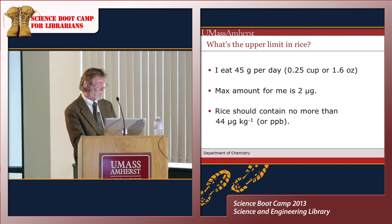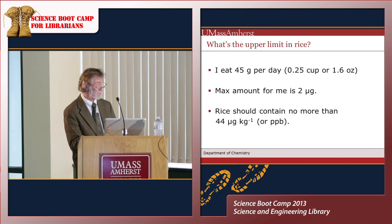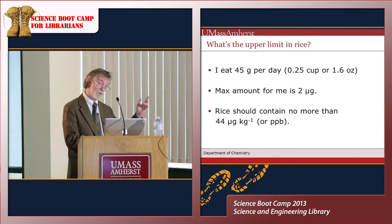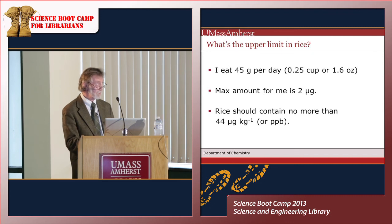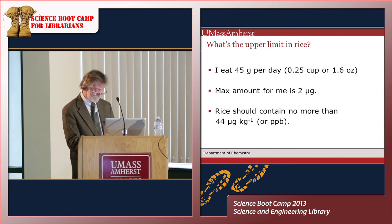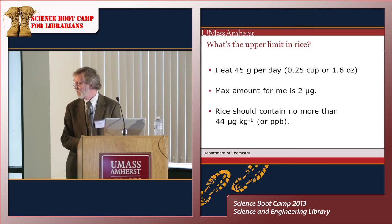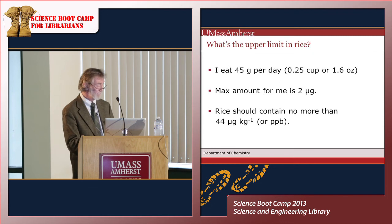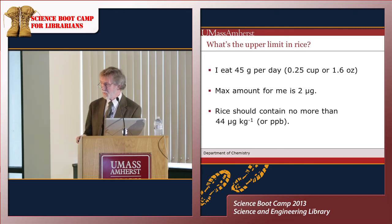Rice is the foodstuff containing the most of the toxic or carcinogenic forms of arsenic. If I eat 45 grams per day — a quarter of a cup — then given my maximum of 2 micrograms, the concentration of arsenic in that rice should be no more than 45 micrograms per kilogram, i.e., 44 parts per billion. I'll use PPB from now on rather than micrograms per kilogram.